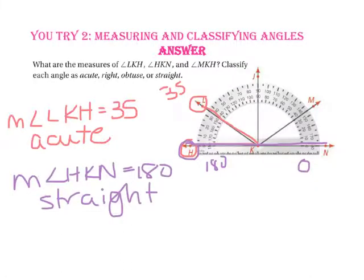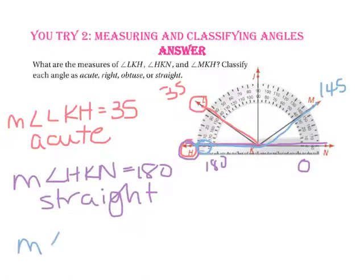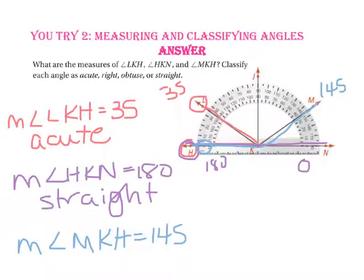Finally, let's take a look at angle MKH. Since H is at 0, ray KH is at 0 on the outside ring. Following that around on the outside ring, ray KM is at 145 degrees. So the measure of angle MKH is 145. Since this is greater than 90 degrees but less than 180, angle MKH is an obtuse angle.